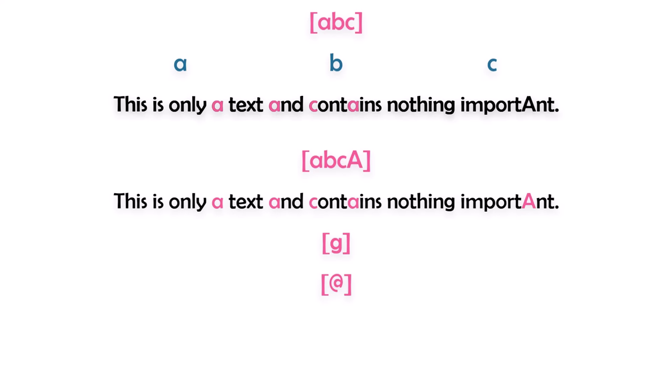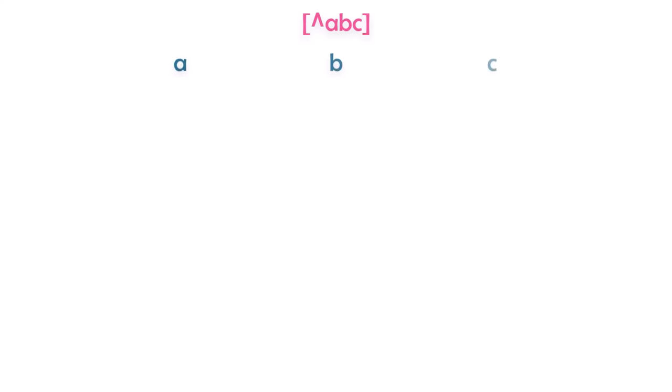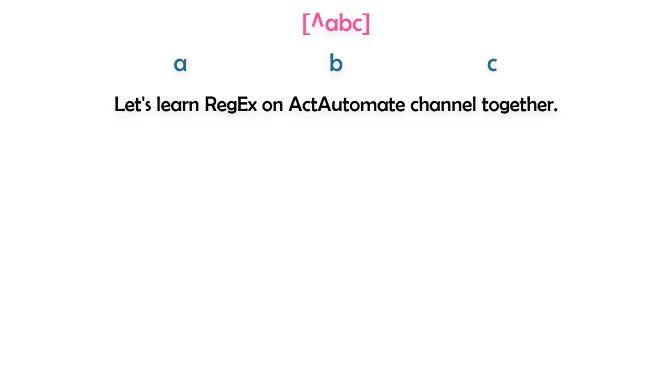This is how to find a specific character or characters inside a text. Assume I want to get all characters from the text except a specific character. For that I can use a negated character set with a caret inside the brackets. This means I want to get each character as output except the characters defined in this set — for example, except letters A, B, and C.